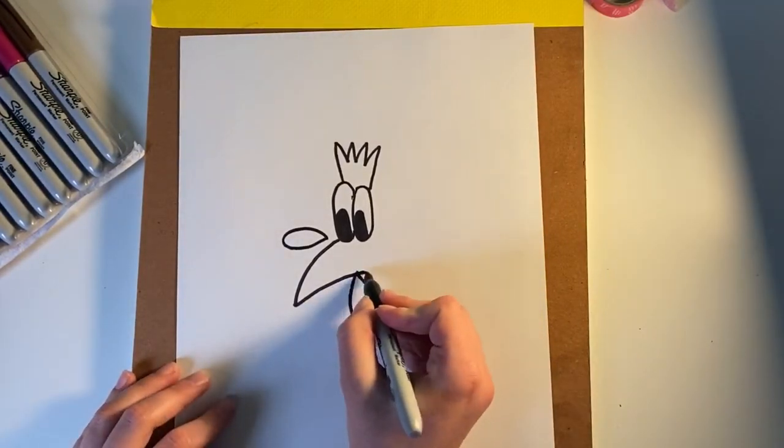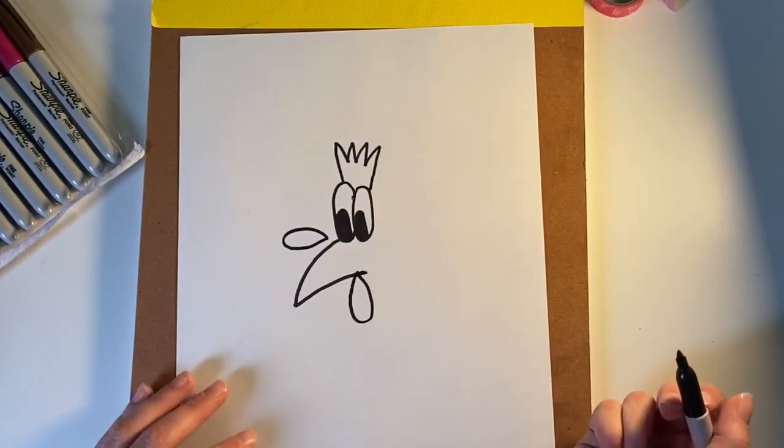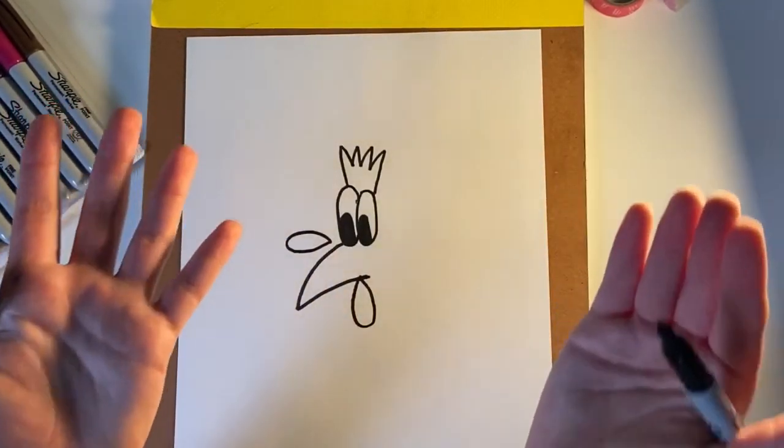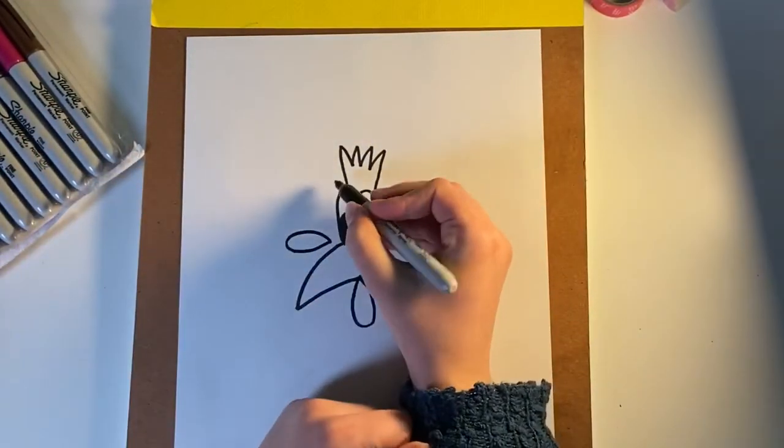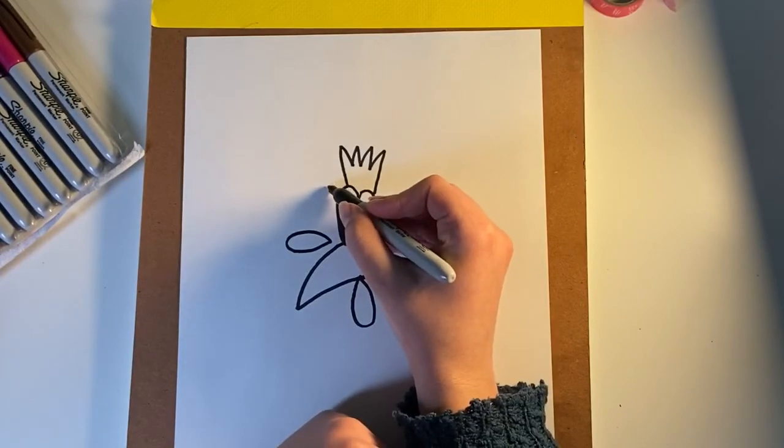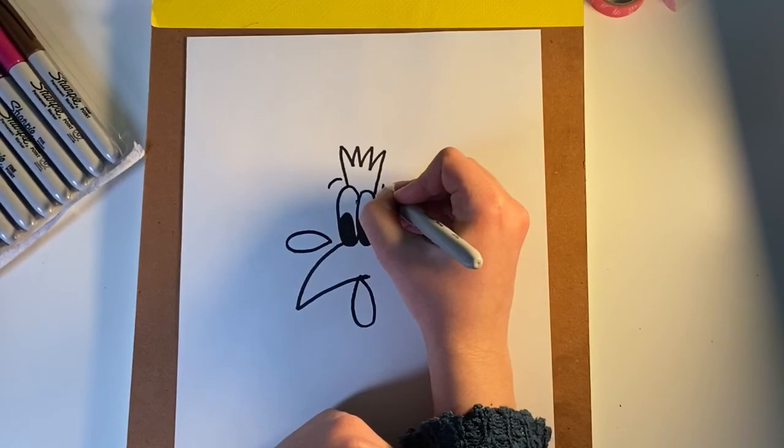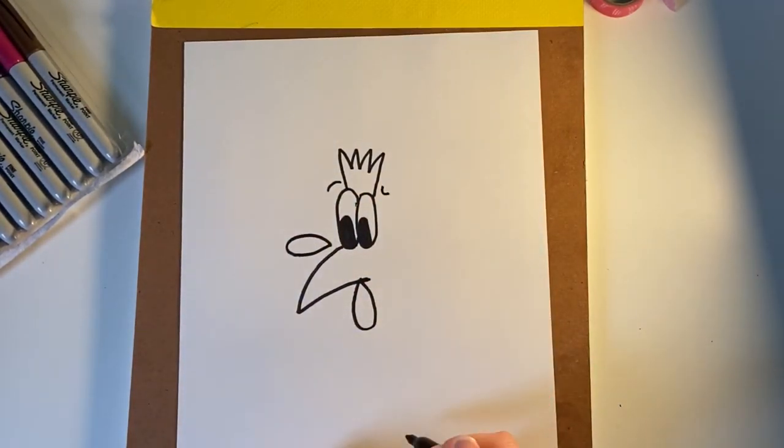And now we're gonna make the eyebrows, which chickens don't have eyebrows, but it just makes this character look more funny. So we're gonna draw a curve line here, and then another one here, this time upside down. And there we go, there's our chicken, our funny little chicken.